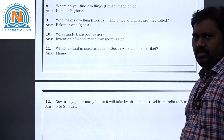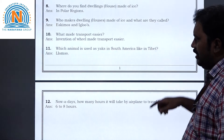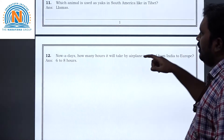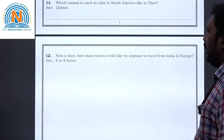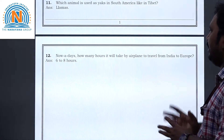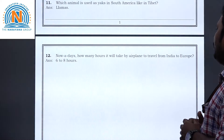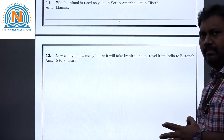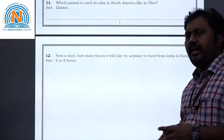Question 11: Which animal is used as a beast of burden in South America, like in Tibet? The answer is llamas. Question 12: Nowadays, how many hours does it take by aeroplane to travel from India to Europe? The answer is around six to eight hours.